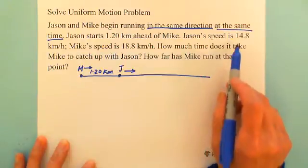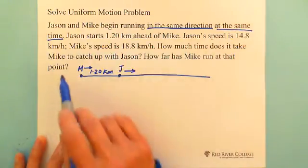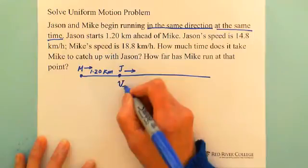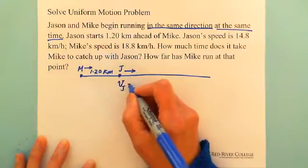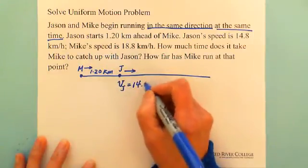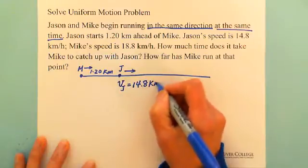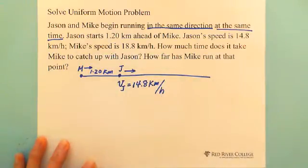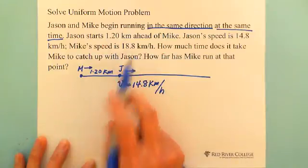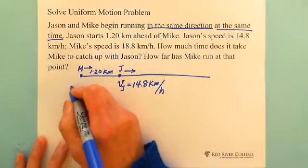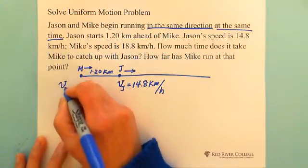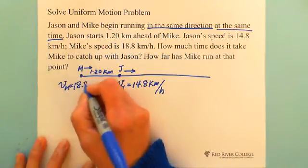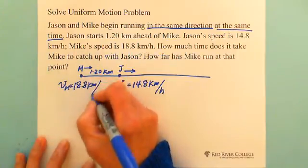Jason's speed is 14.8 km per hour — we write V_Jason equals 14.8 km/h. And Mike's speed is 18.8 km per hour, so V_Mike equals 18.8 km/h.